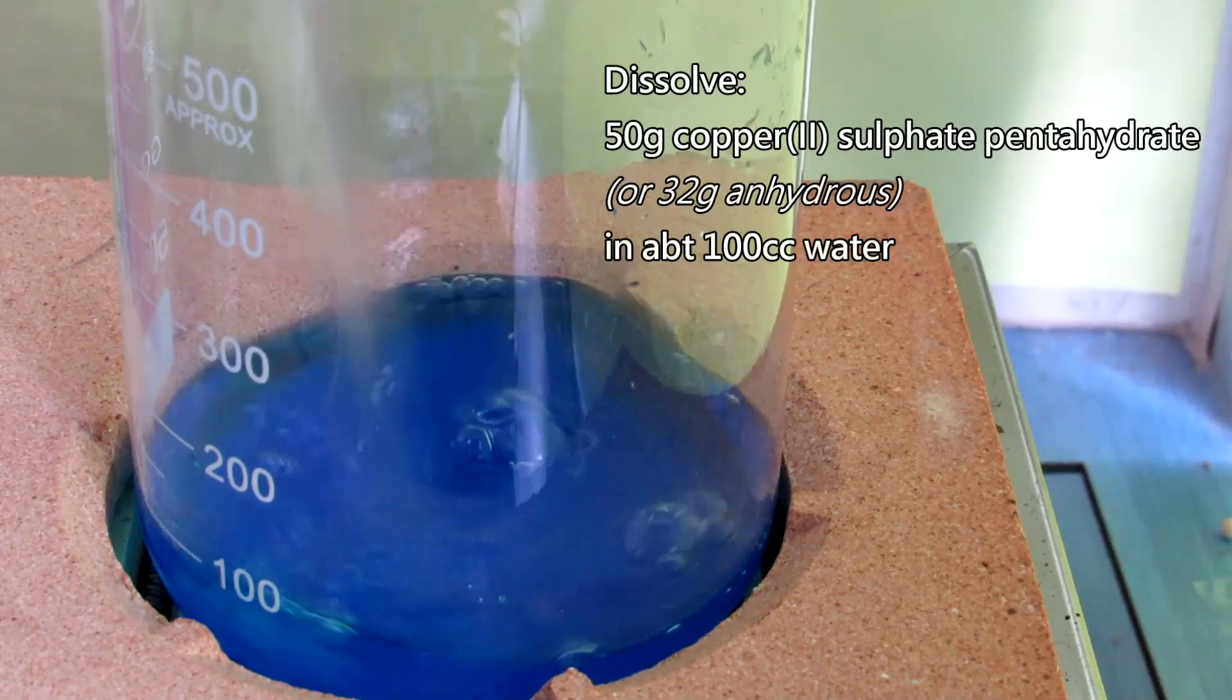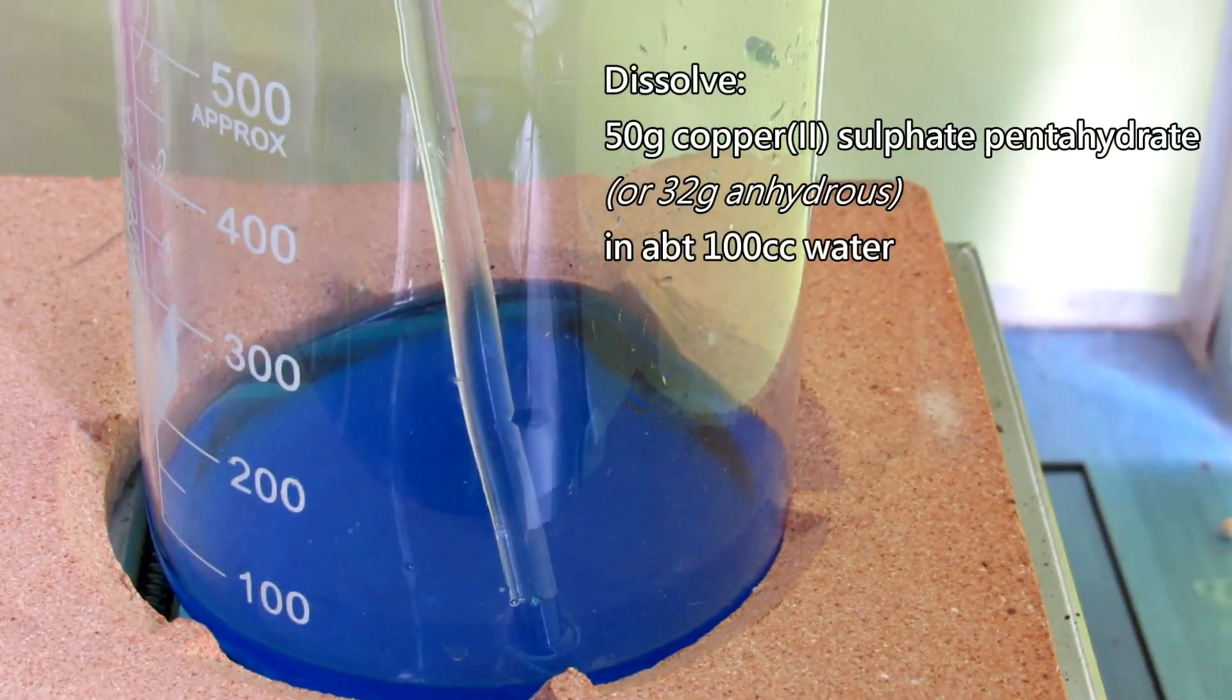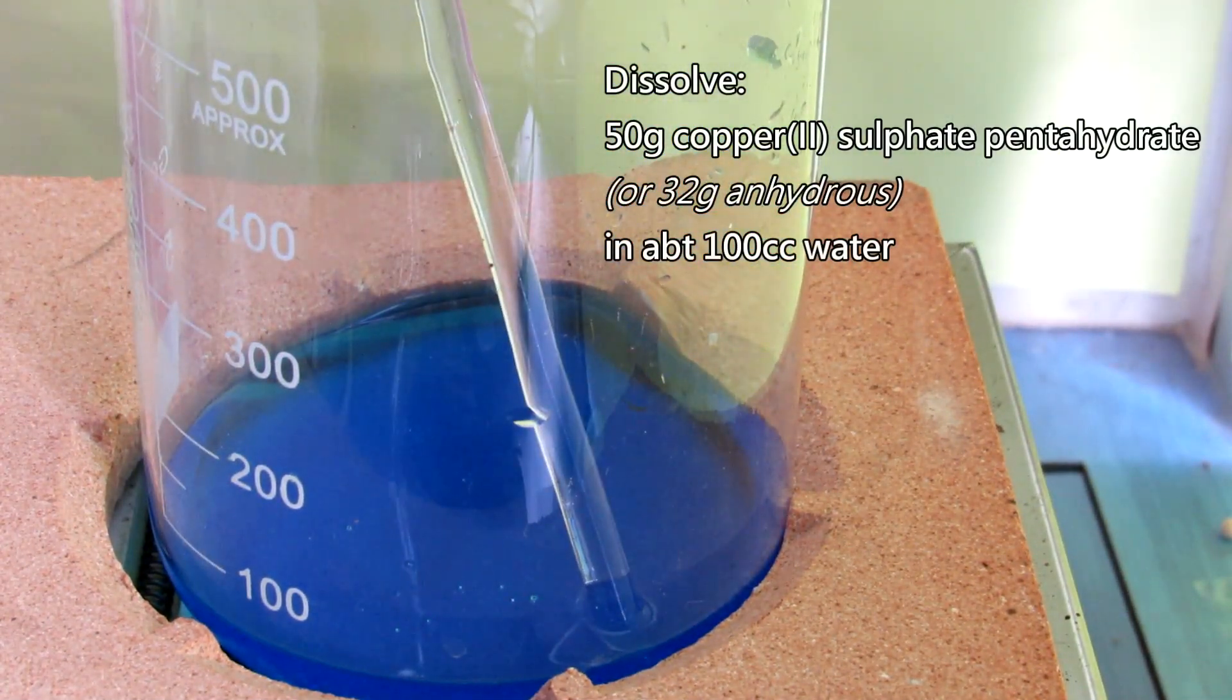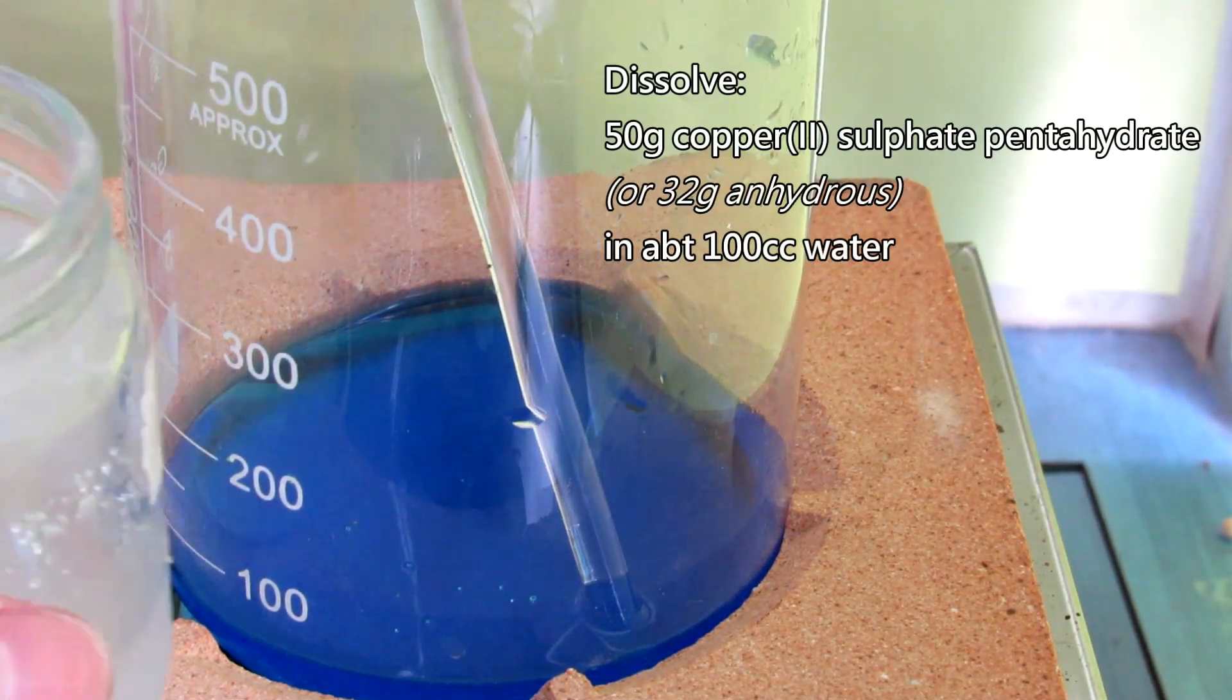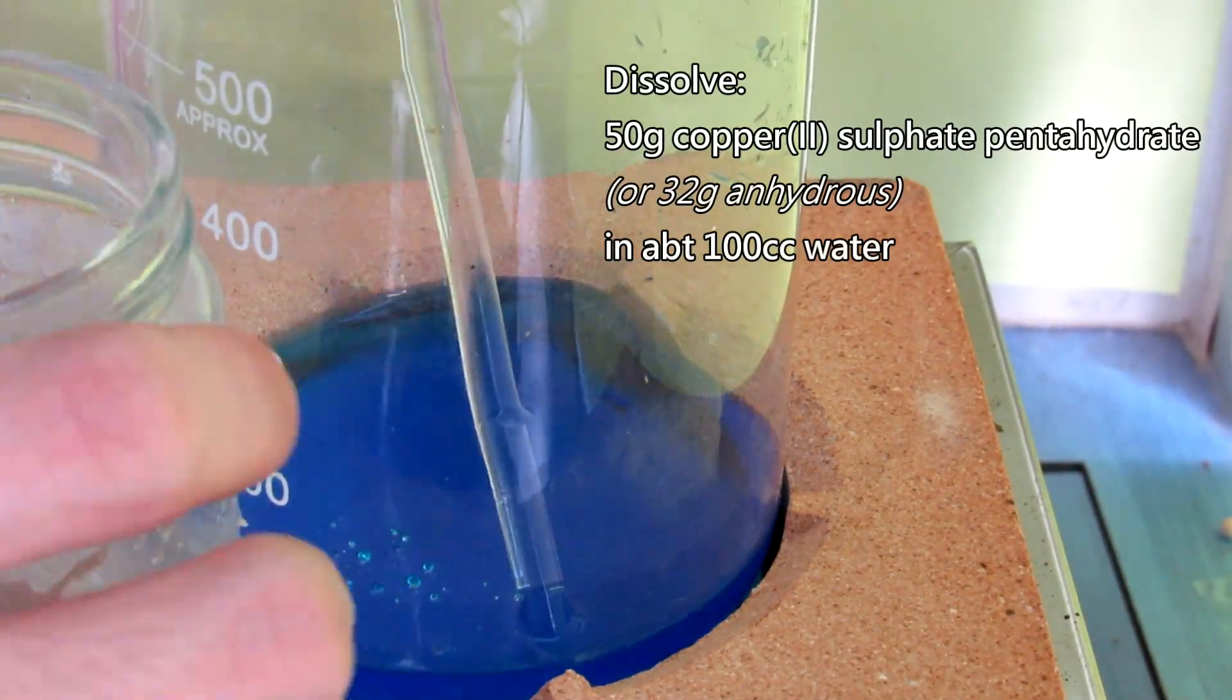First, dissolve 50 grams of copper-2-sulfate in roughly 100 cc of water. I heated and stirred the solution to speed up the dissolution.